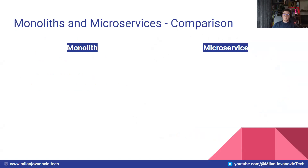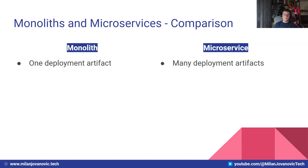Let's try to compare monoliths and microservices on a few points. The first is deployment. For monoliths, we have one deployment artifact, whereas for microservices we have many — one deployment artifact for each service that is part of the system. For microservices, you're going to find that deployment is generally a lot more complicated and a lot more things can go wrong than with monoliths.